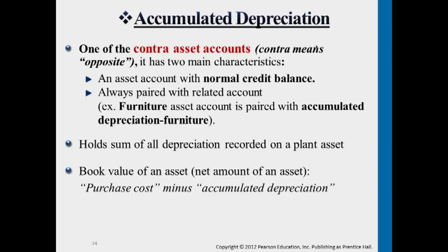This is a special case for assets. Earlier, remember the supplies case — we directly reduce supplies and turn that into supplies expense. For long-term assets, because the value is usually much more costly than short-term assets, under the balance sheet we have furniture, land, building in different T-accounts. On the debit side you usually see the original purchase cost. When reducing the value of those assets, we use a separate contra account called accumulated depreciation — the part we estimate has declined in value for long-term assets.